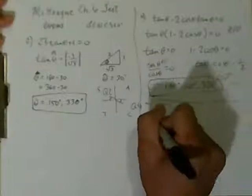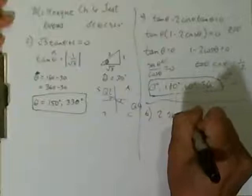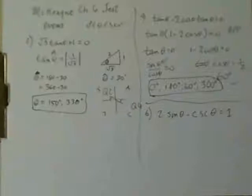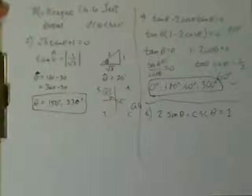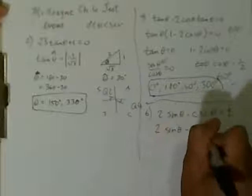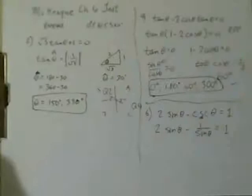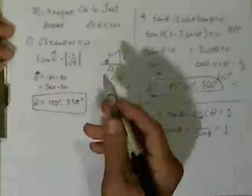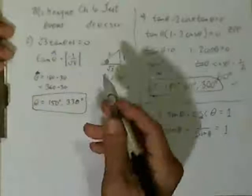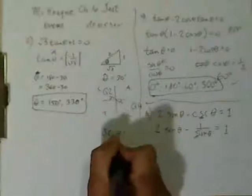So let's do the next problem — number 6. It's a little bit more difficult, but not that bad. 2 sine theta minus cosecant theta is equal to 1. On the left-hand side, you have sine theta with cosecant theta. As stated in chapter 6 sections 1 and 2, you have to change all of the cosecant, cotangent, tangent, and secant functions to sine and cosine. That becomes 2 sine theta minus 1 over sine theta equals 1. Remember, the cosecant has an S in the middle — that's where the sine comes from.